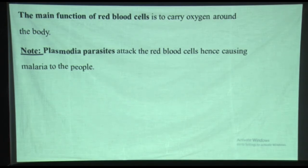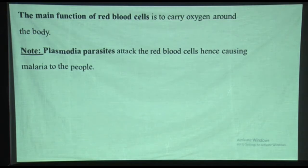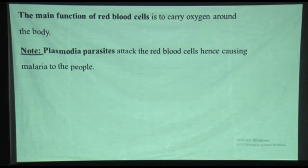Plasmodia parasites attack red blood cells, and when they attack red blood cells, they cause malaria to people. That's why someone who has malaria also shows a reduced number of red blood cells, because plasmodia will attack and affect red blood cells, causing or leading to malaria.